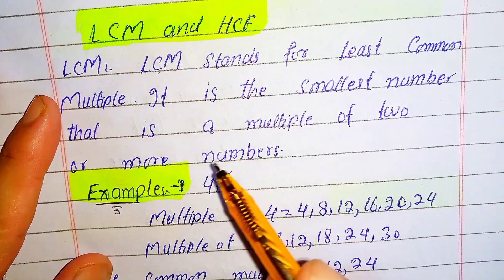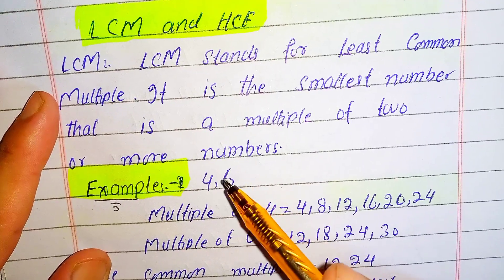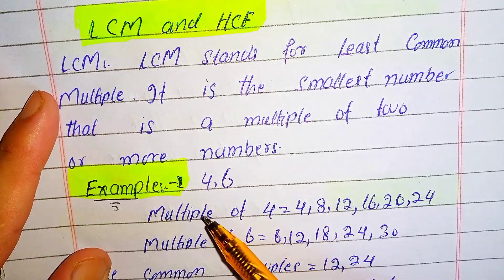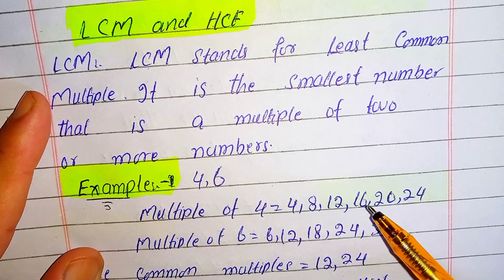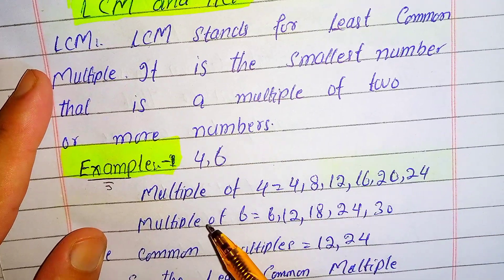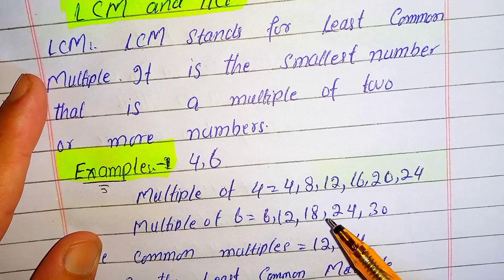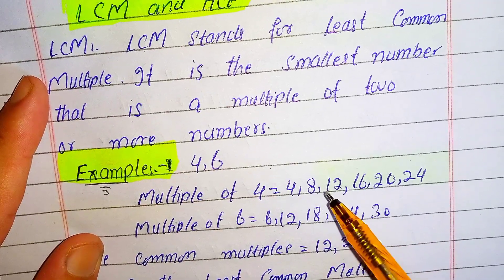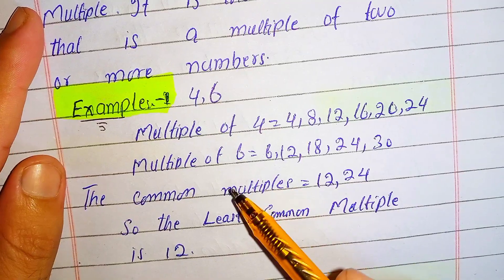For example, if we want to find the LCM of 4 and 6, the multiples of 4 are: 4, 8, 12, 16, 20, 24. The multiples of 6 are: 6, 12, 18, 24. These are the multiples of 4 and 6.